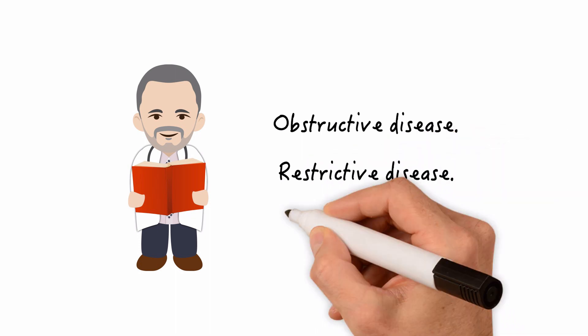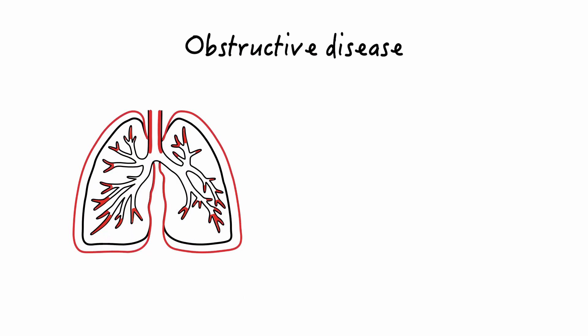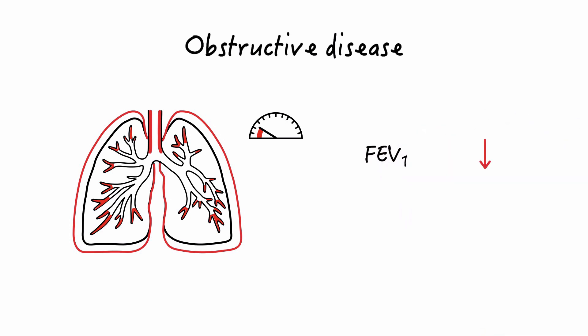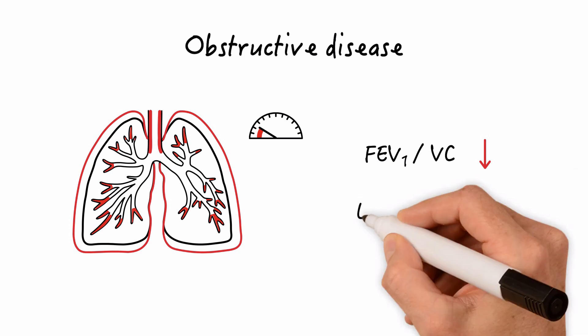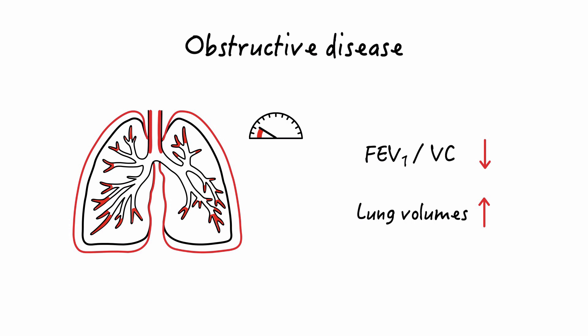An obstructive pattern, usually due to airway narrowing anywhere from the upper airway to the small peripheral bronchioles, is characterized by reduced airflow rates with a reduction in the ratio of FEV1 to vital capacity. Commonly, an elevation in lung volumes, particularly TLC, may also be noted.